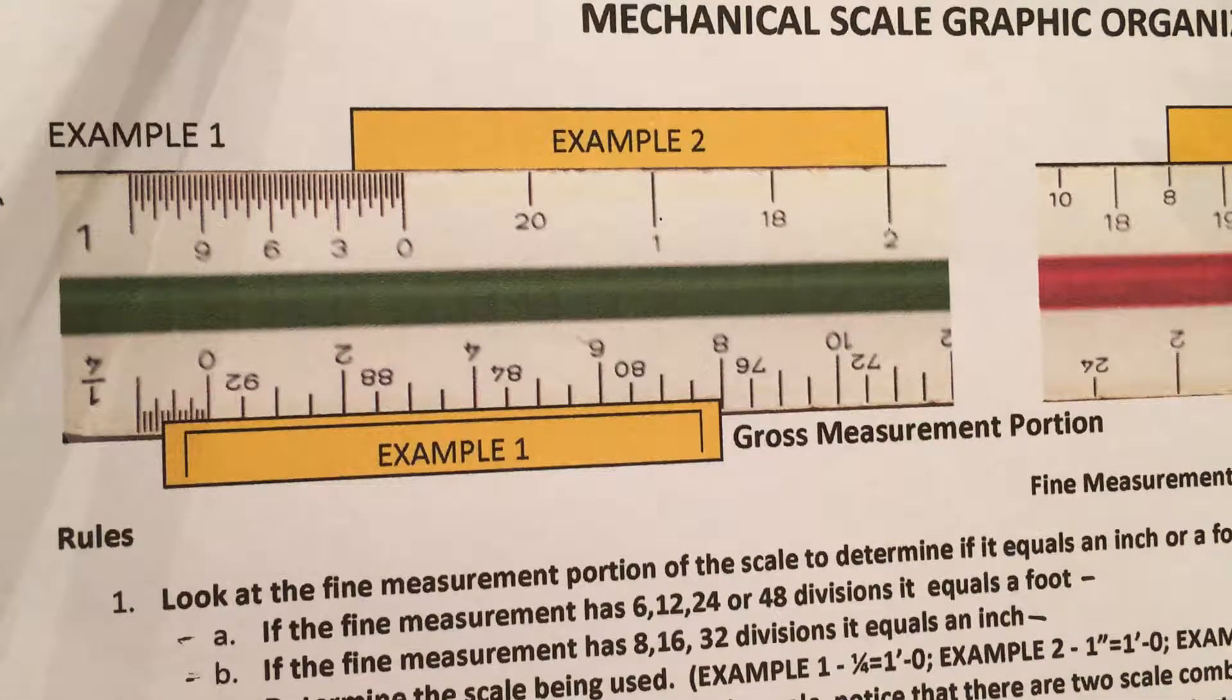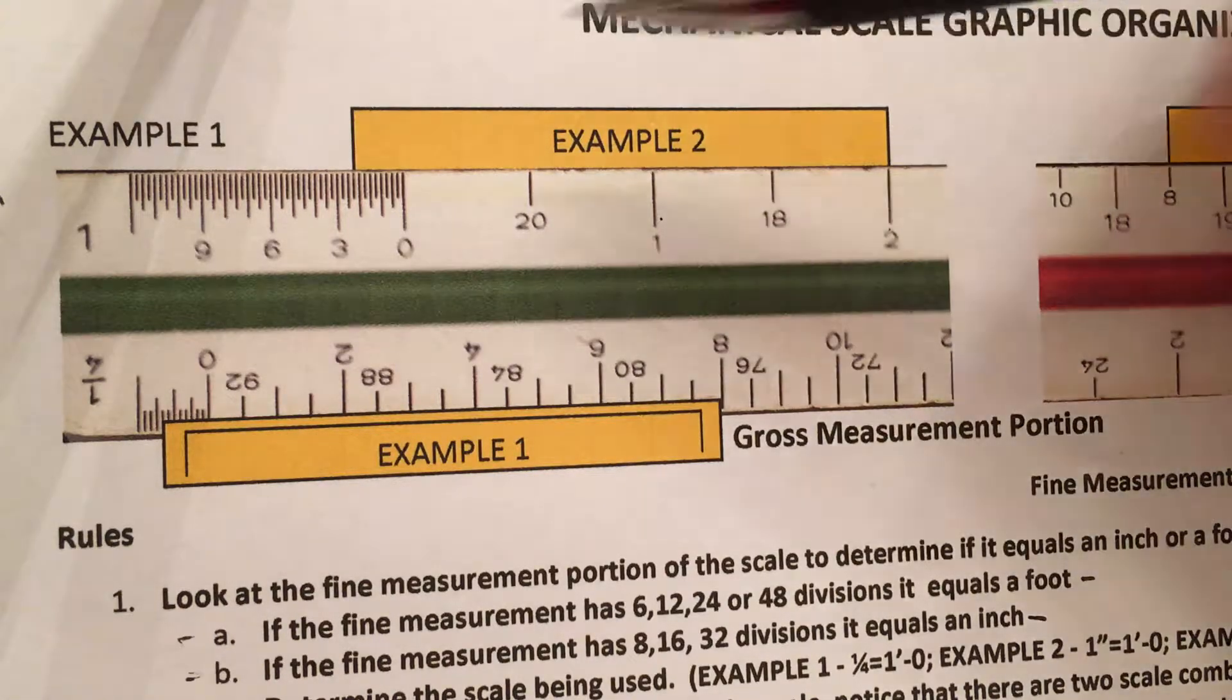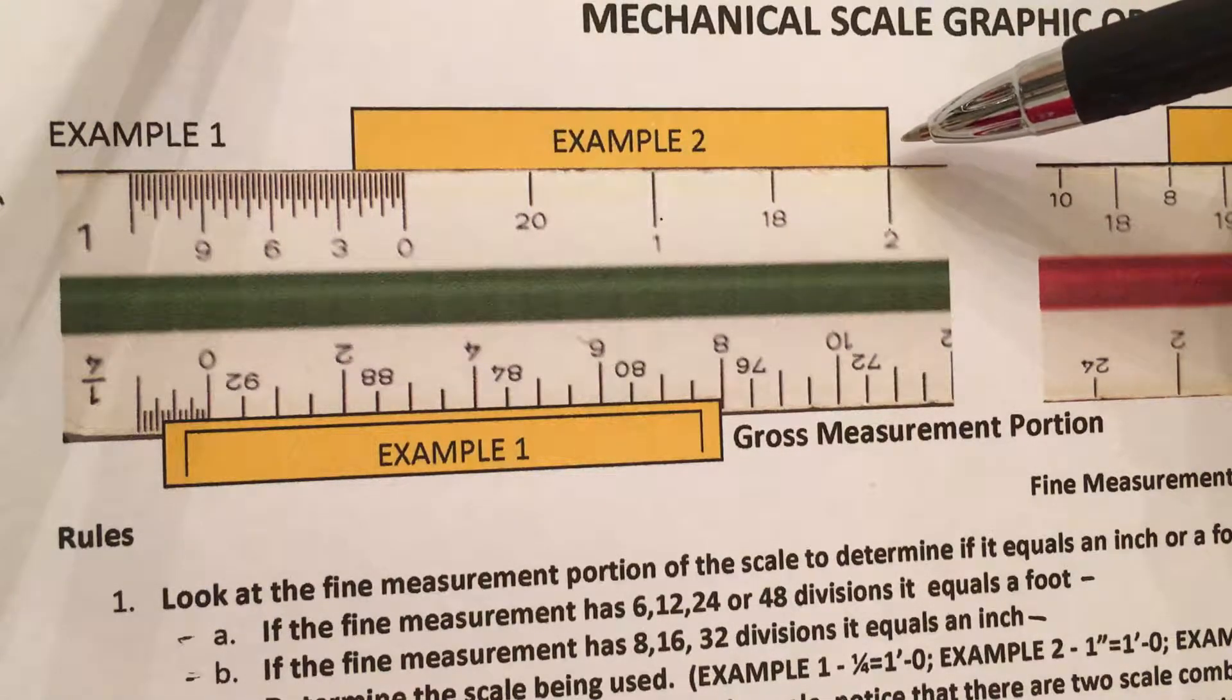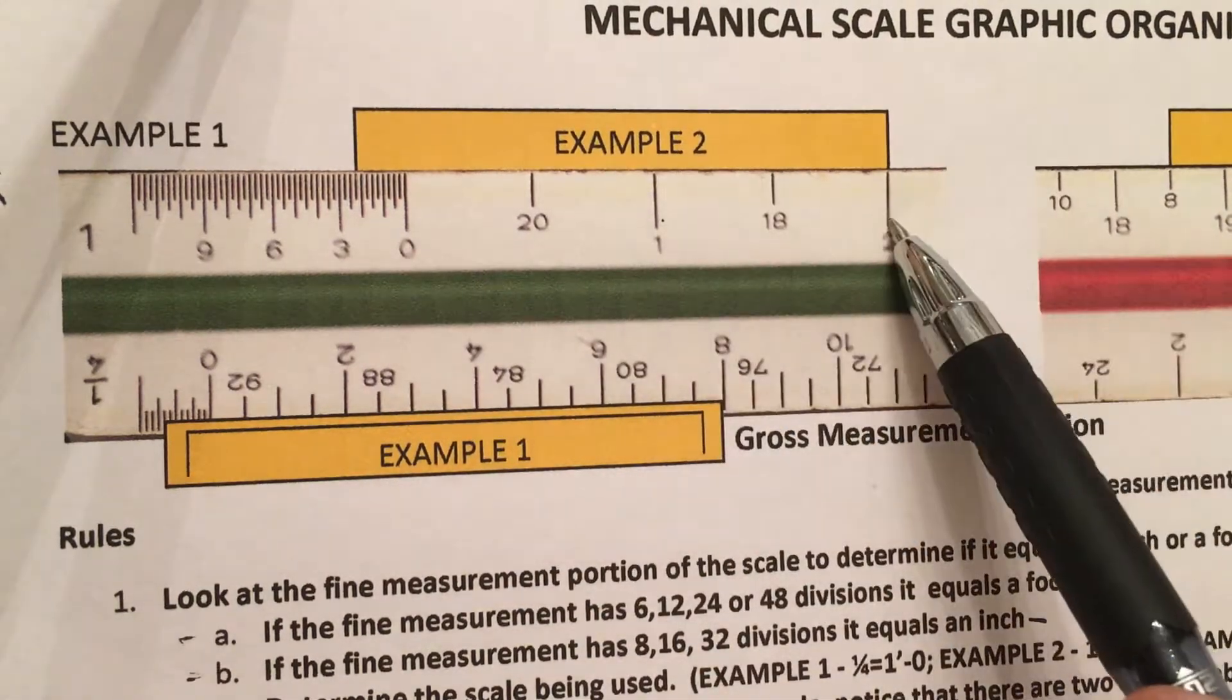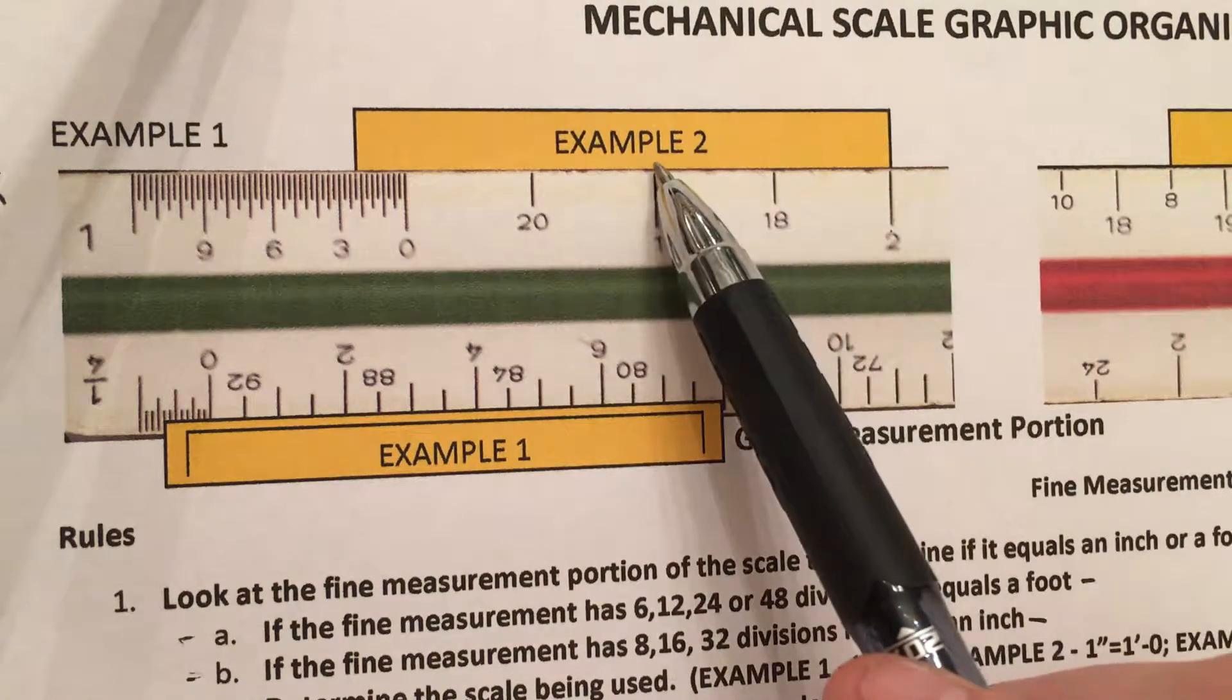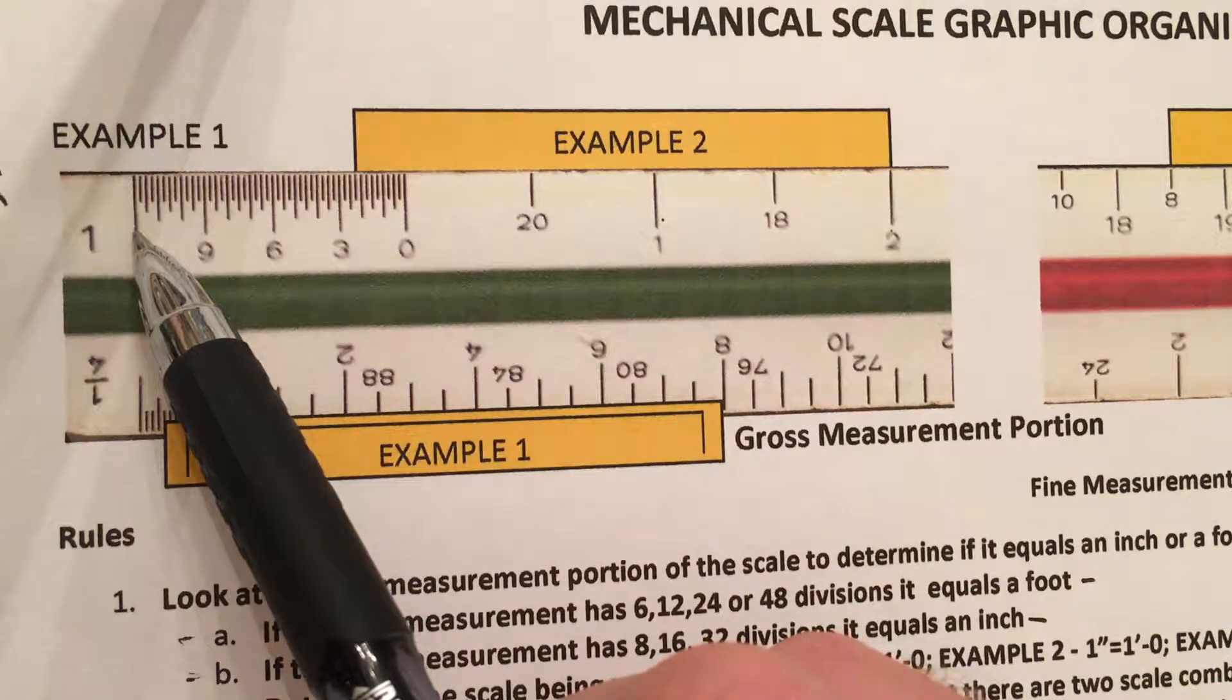The way you use a mechanical scale is that you take the object that you are measuring, in this case it's this yellow line, and you set it to the nearest whole number of gross measurement. In this case, starting from zero, I have one and two. It wouldn't go to three because it would not extend and it would cover one and hang past my end mark down here.